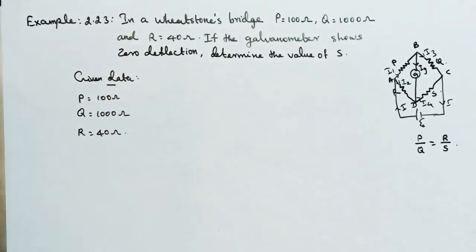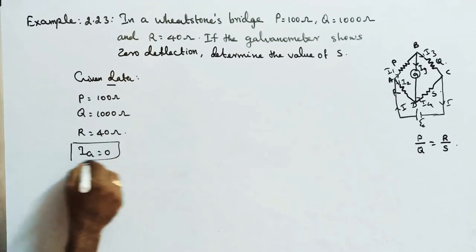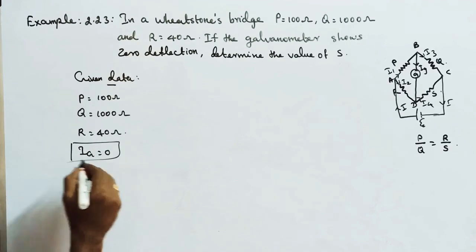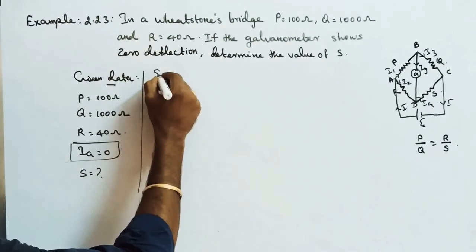Next, R is equal to 40 ohm. The galvanometer shows zero deflection, so current value is equal to zero. Using this, we determine the value of S. So next, what is the solution?